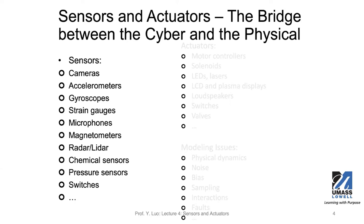Here's a short list of sensors. For example, cameras, image sensors, accelerometers measuring the acceleration, and gyroscopes measuring the rotation. We also have strain gauges, which measure the pressure or strain on the surface. We have sound sensors and microphones. We have magnetometers to measure magnetic fields, radar and LiDAR to monitor distance, and a variety of chemical sensors, pressure sensors, and switches.